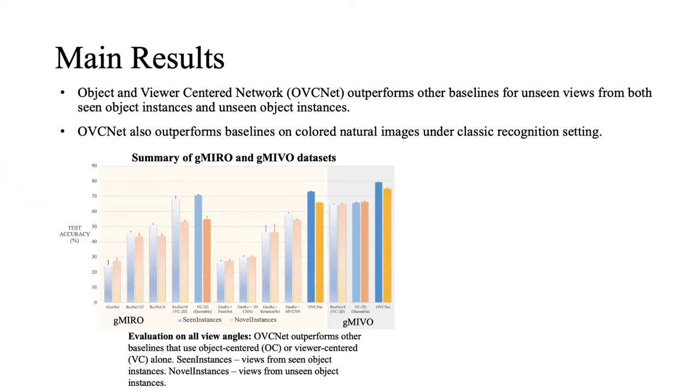In summary, our OVCNet outperforms other baselines for unseen views from both seen and unseen object instances on both small and larger datasets. The network can also be easily adopted for natural images.